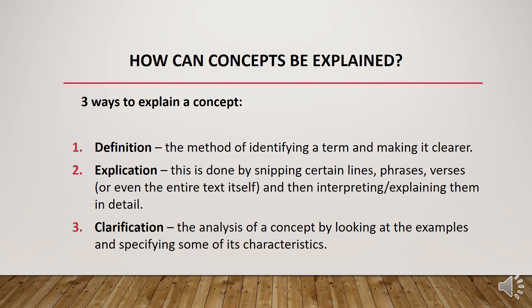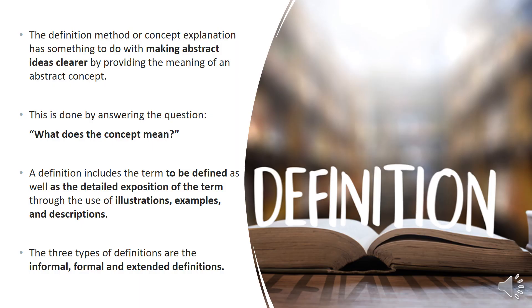Number one is definition. Second is explication. And the other one is clarification. For definition, it is a method of concept explanation that has something to do with making abstract ideas clearer by providing the meaning of an abstract concept. Usually, we use our dictionary in looking for the meaning of the concept. It also answers the question: what does the concept mean? The definition includes the term to be defined, as well as the detailed exposition of the term through the use of illustrations, examples, and descriptions.